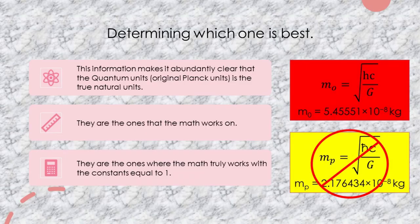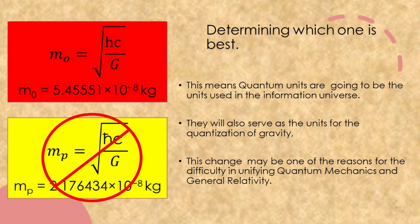This makes it abundantly clear that the quantum units — the original Planck units — are the true natural units. They are the ones that the math really works with, and the ones where the math truly works with the constants equal to 1. This means that quantum units are going to be the units used in the information universe and will also serve as the units for the quantization of gravity.